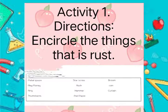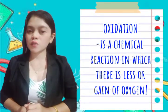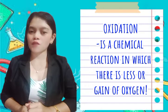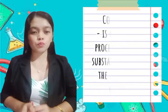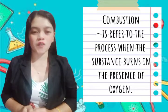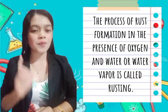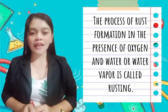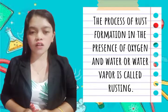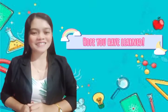Okay class, this is the other set of your activity and you can answer it. Remember, oxidation is a chemical reaction in which there is loss or gain of oxygen. Combustion refers to the process when a substance burns in the presence of oxygen. The process of rust formation in the presence of oxygen and water is called rusting. Okay class, see you on our next meeting. Hope you have learned from our lesson today. Thank you!